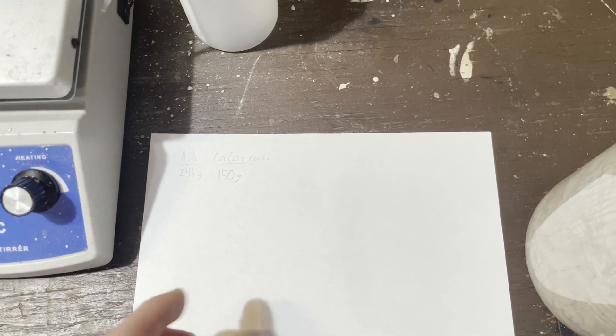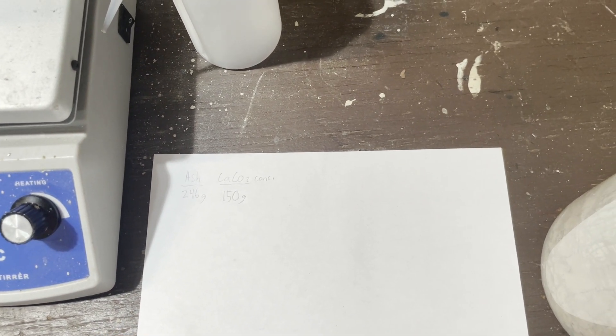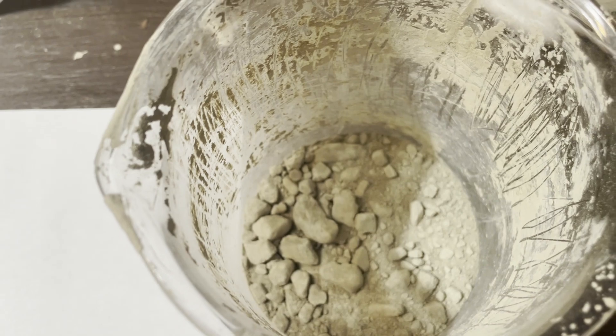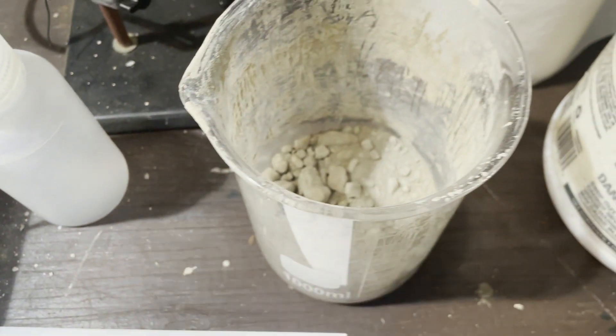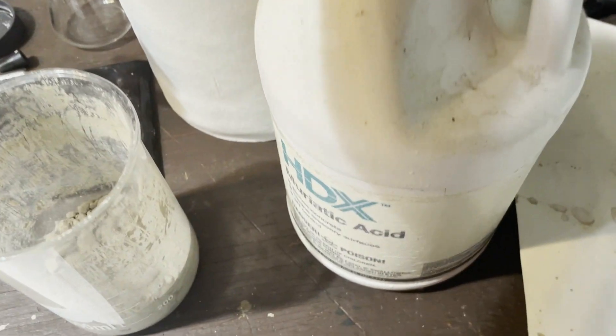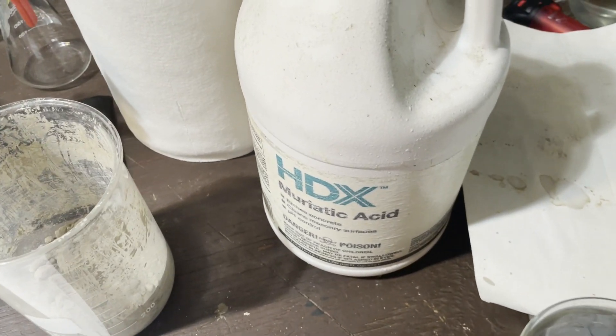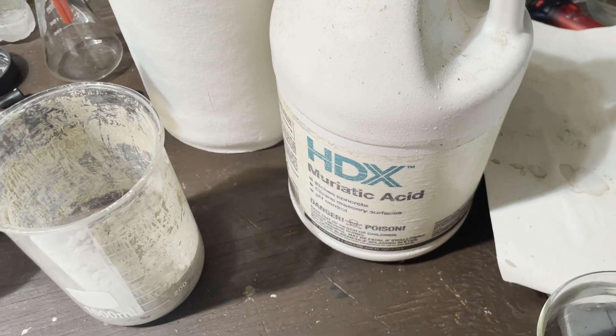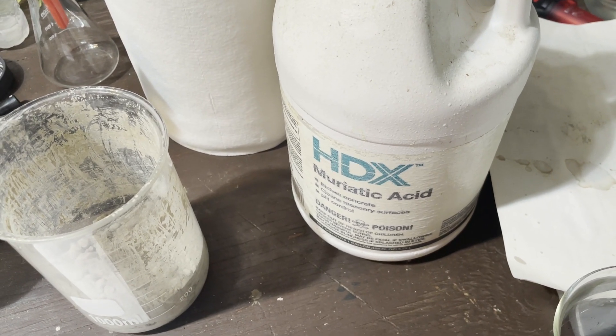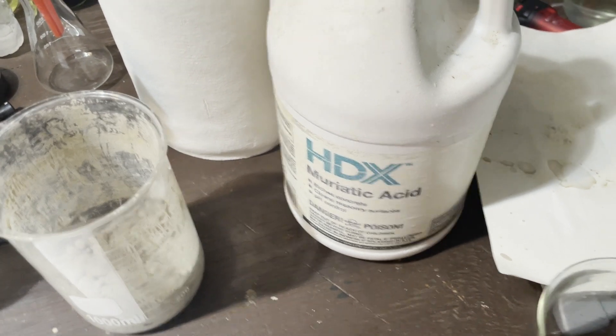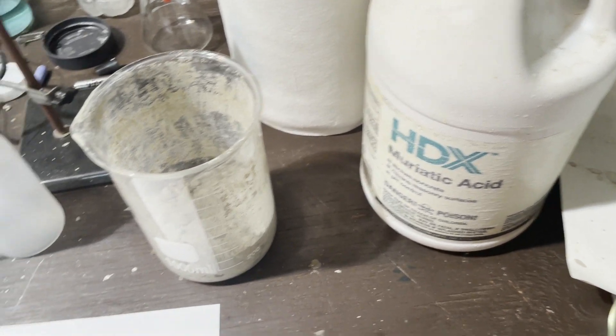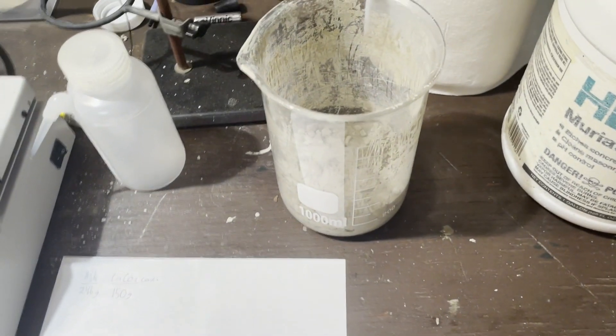Now, for getting the calcium chloride, I need to neutralize all of the calcium carbonate in here and turn it into calcium chloride with muriatic acid, also known as hydrochloric acid. So, muriatic acid is definitely corrosive, fumes are not fun to breathe, and you don't want to get this on your skin. So, I will be putting on gloves and dissolving this.